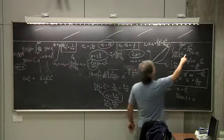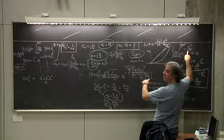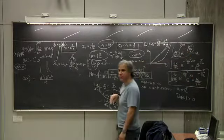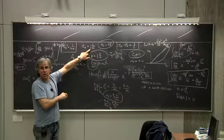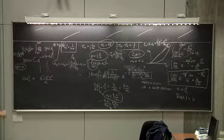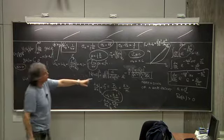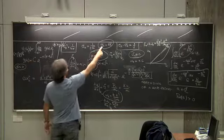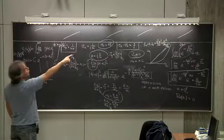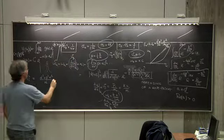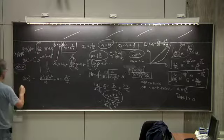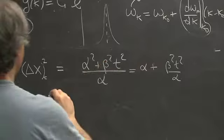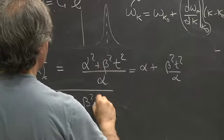We consider three cases. Case A: an electron with mass approximately nine times ten to the minus thirty-one kilograms, initial spreading delta x of ten to the minus five meters (ten microns). Case B: same mass electron but initial spreading ten to the minus ten meters — one angstrom, atomic size. Case C: a small but macroscopic object with mass ten to the minus three kilograms (one gram) and initial spreading ten to the minus three meters (one millimeter).